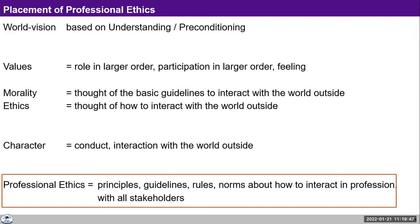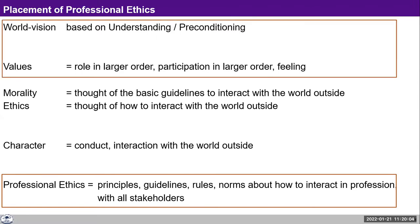On the other hand, if we are unable to do that first part and our world vision is some sort of preconditioning, then the values we assume may be very different. In the first four modules, we have covered the world vision and the values part. Now we are going to talk about the other parts.